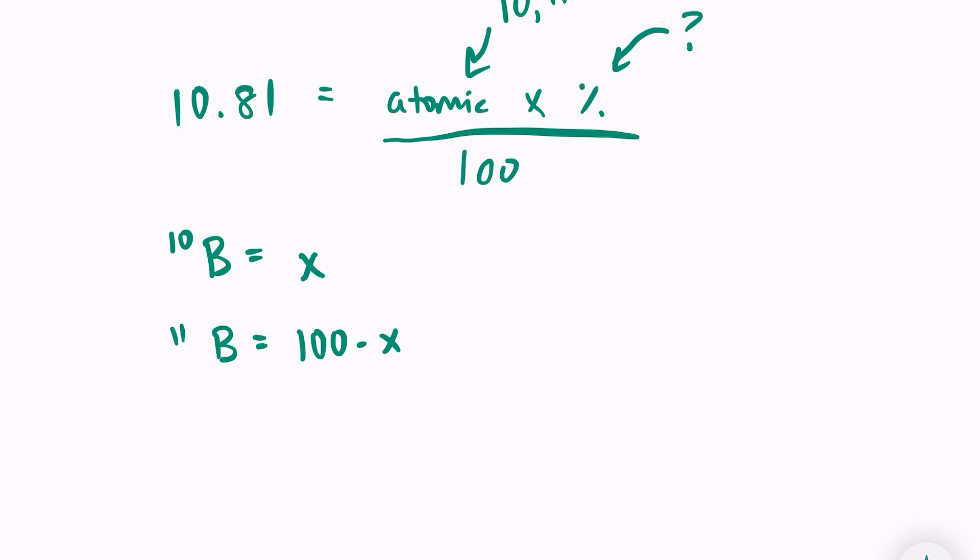So to find our total mass, we should multiply our atomic mass by the percentage. So boron-10 weighs 10 AMU, so the total mass here is 10x.